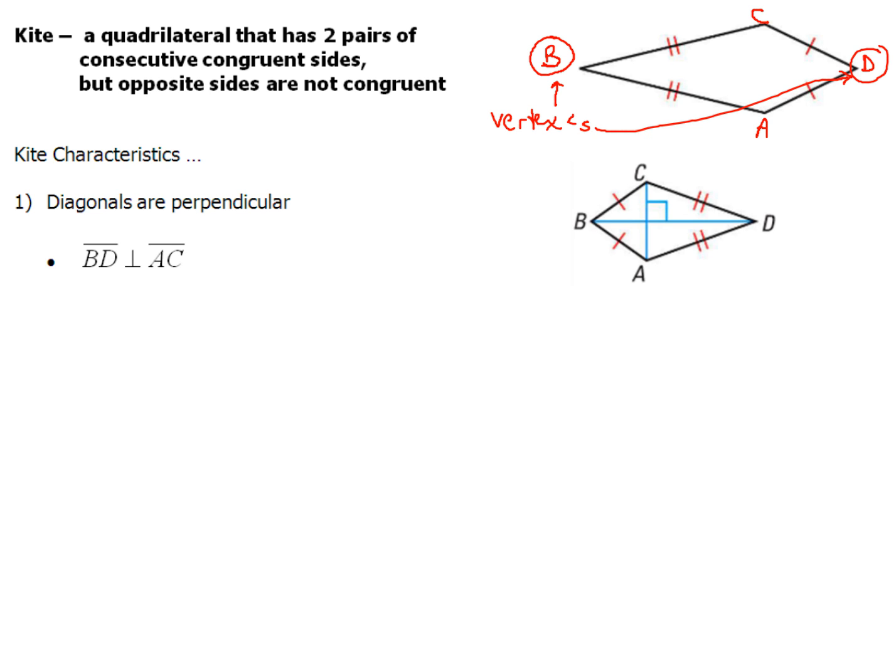Now there's going to be two characteristics we're going to take a look at regarding the diagonals. One of them is that they are perpendicular. So when we have our picture, and we basically draw a line from the vertex that connects the vertex angles and the non-vertex angles, those diagonals are going to be perpendicular. But they also do something else. The diagonals, they bisect the opposite angles. So that means this angle and this angle are going to be the same.